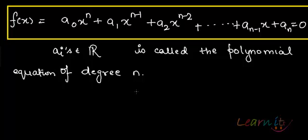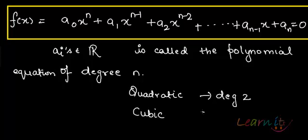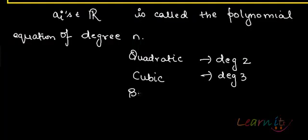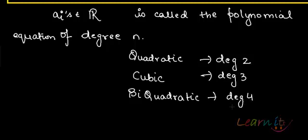The equations we generally deal with are: quadratic, which have degree 2; cubic, which have degree 3; and also at times bi-quadratic, which essentially means degree 4. So a quadratic would look like a₀x² plus a₁x plus a₂ equals to 0.